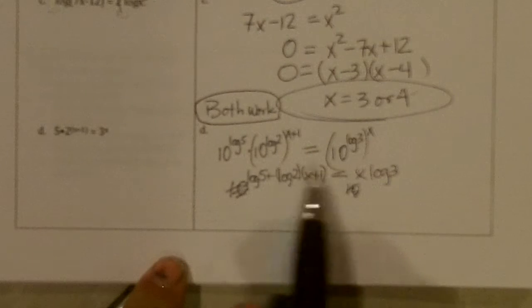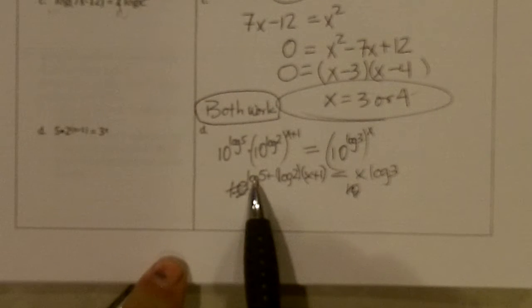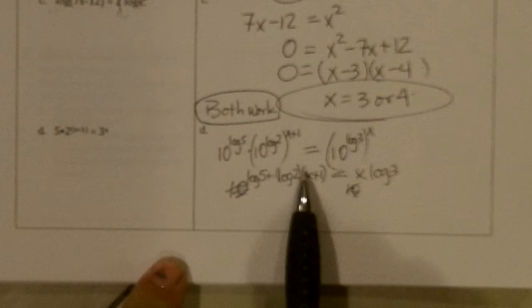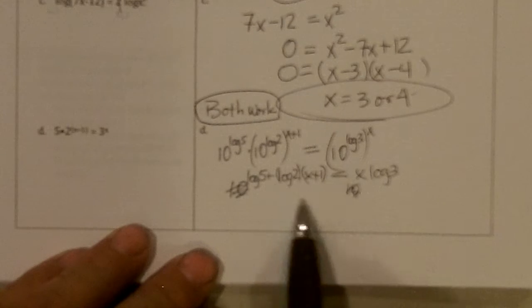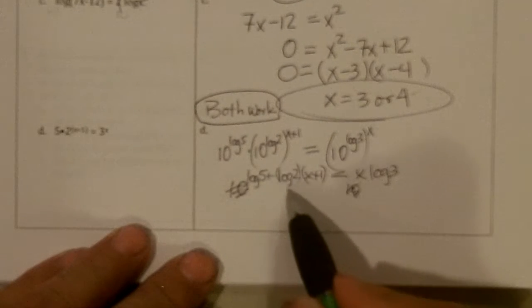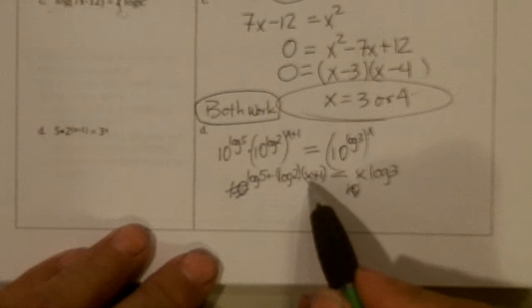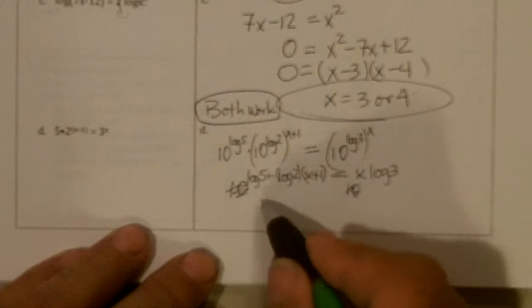And so now I have log 5 plus log 2 times the x plus 1, which is log of 2 times x and log of 2 times 1. And I want to get all the x's on the same side, so I'm going to subtract log 2 times x from both sides.